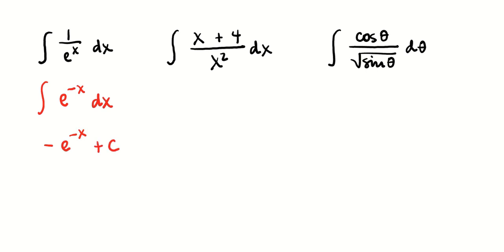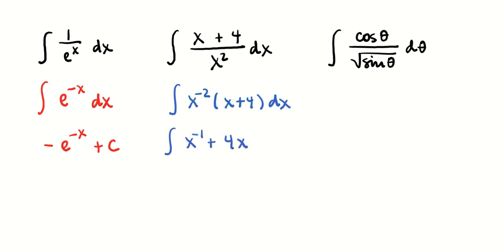The one in the middle, we can divide through by x squared, or multiply by x to the negative 2. We can say that's equal to x to the negative 1 plus 4x to the negative 2. We try to use the power rule — x to the negative 1 gives us log of the absolute value of x — then add 1 to the power and divide by the new power, giving us negative 4x to the negative 1 plus c.